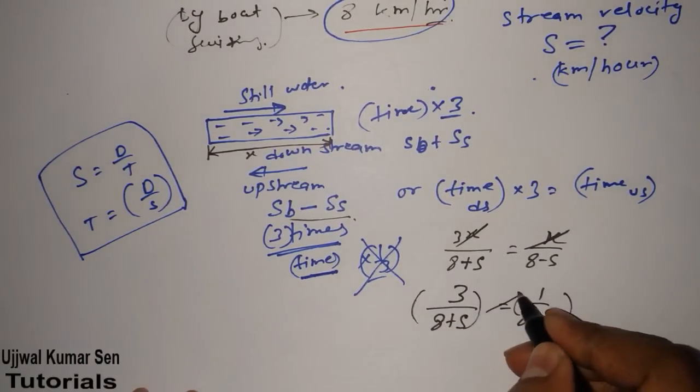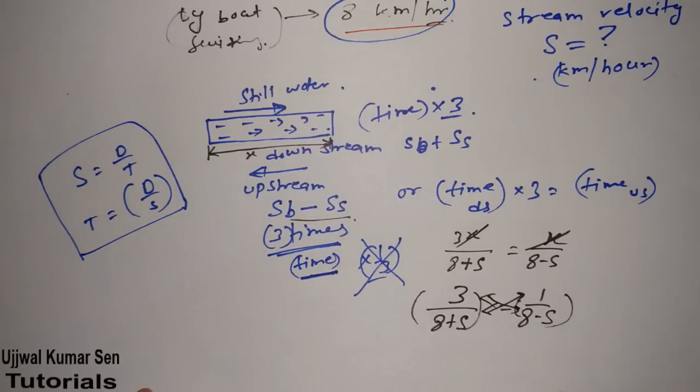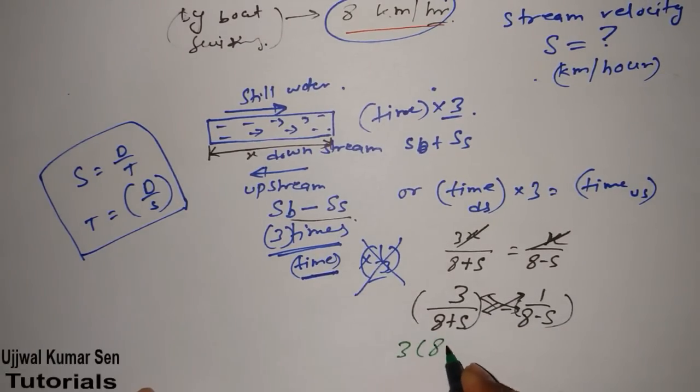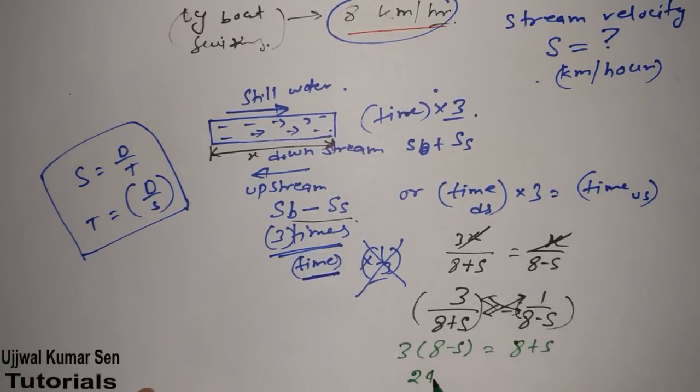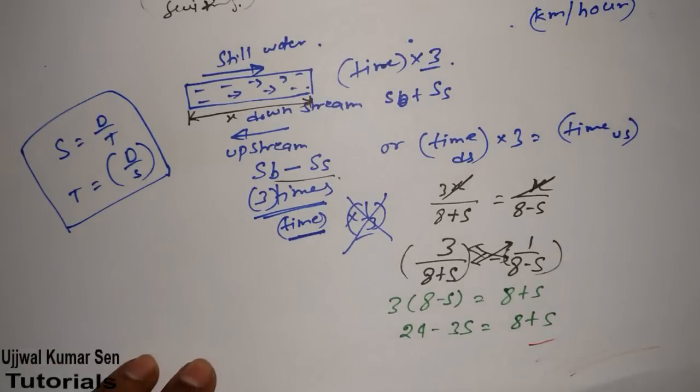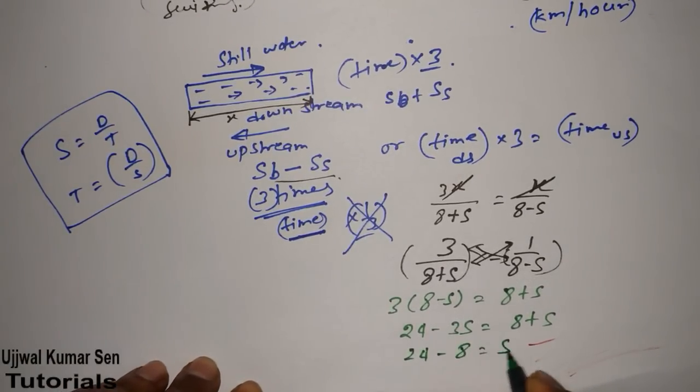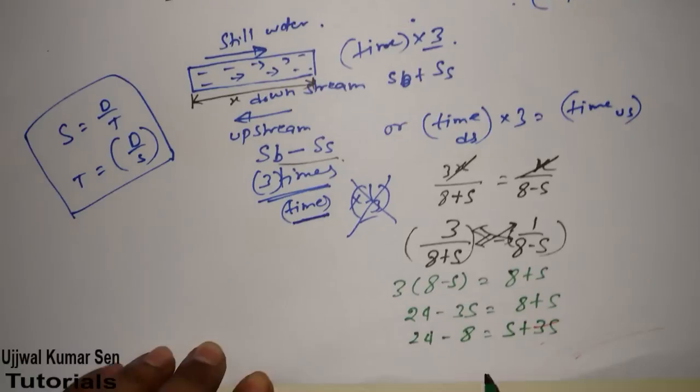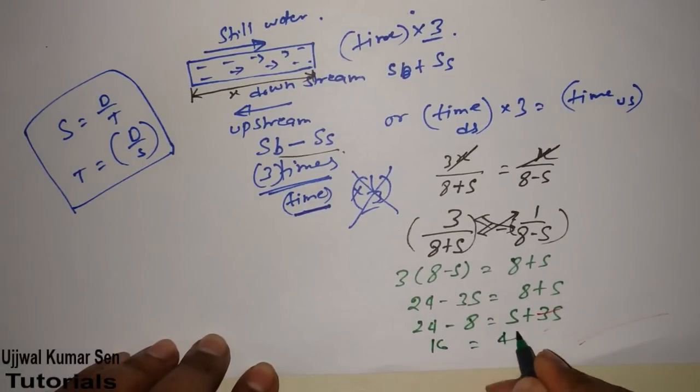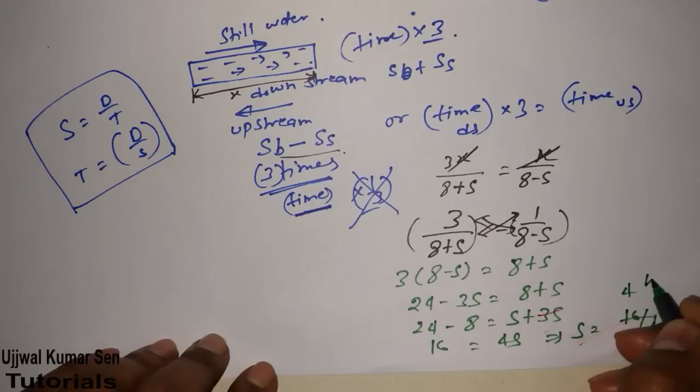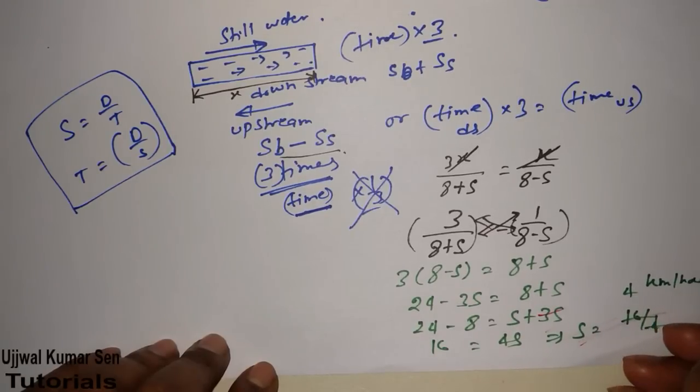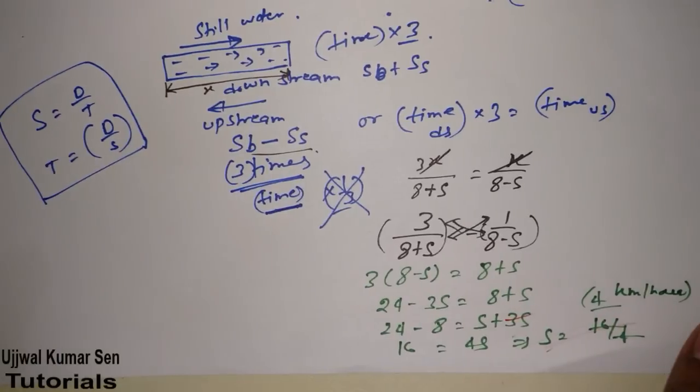Now, I have to do what? Cross multiplication. After cross multiplication, what exactly we are getting? 3 times 8 minus s equals 8 plus s. So, 24 minus 3s is equal to 8 plus s. So, 24 minus 8 is equal to s plus 3s. So, 16 is equal to 4s. So, we can write, s is equal to 16 by 4. So, 4 kilometer per hour, the speed of the stream.